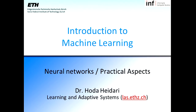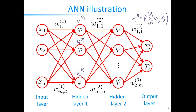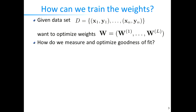At a high level, neural networks are represented by computation graphs. You have an input layer where the network is fed with feature values, then these inputs go to hidden units — there could be more than one hidden layer — and at the end you have an output layer which gives you the prediction for the given input.